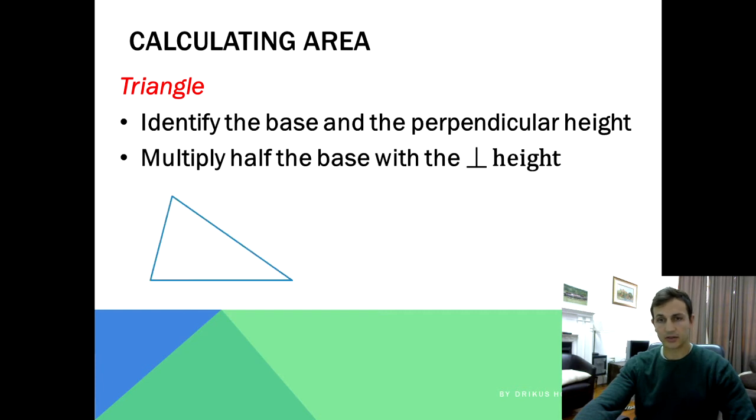So multiply half the base with the perpendicular height. If we have this triangle here, it's not a right angle triangle, it is an acute angle triangle. And now we have, let's say we've got these lengths to these sides. Now let's say we make use of this side as our base. Then we need to identify the perpendicular height. That is not our perpendicular height. Why not? Why can this not be our perpendicular height?